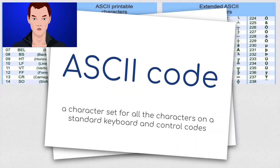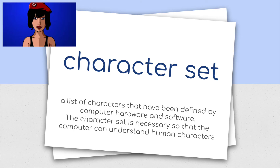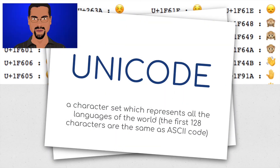ASCII code: a character set for all the characters on a standard keyboard and control codes. Character set: a list of characters that have been defined by computer hardware and software. The character set is necessary so that the computer can understand human characters. Unicode: a character set which represents all the languages of the world. The first 128 characters are the same as ASCII code.